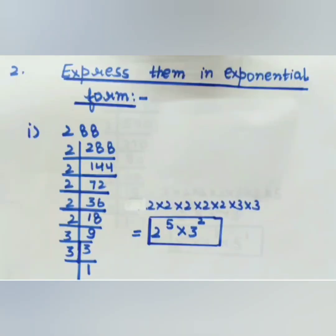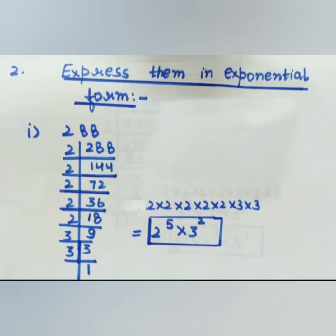Moving to question 2 — express them in the exponential form. We have to write 288 in exponential form, that is, in 'to the power' form. We find the prime factorization of 288 using the LCM division method. I have already explained the concept of LCM in my previous video on LCM and HCF — do check it if you are not aware of it.